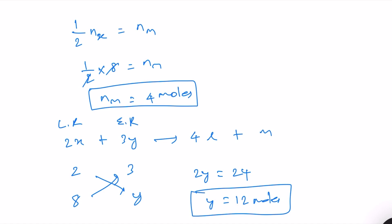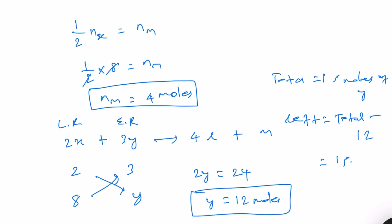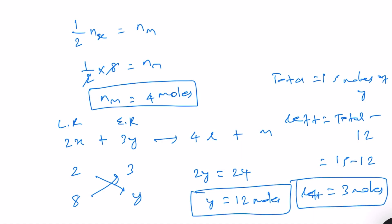When you have 8 moles of X, you need 12 moles of Y. The total Y given is 15 moles, so the excess left equals total minus used: 15 minus 12 equals 3 moles. Therefore, the amount of excess reactant left at the end of the reaction is 3 moles.